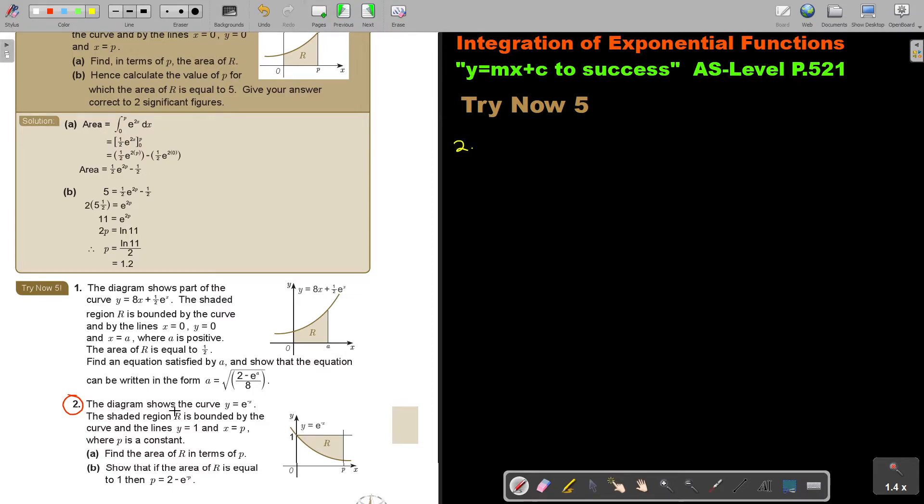The diagram shows the curve Y is equal to e to the power of negative x. The shaded region R is bounded by the curve and the lines Y equals 1. So remember, this is the line Y equals 1.